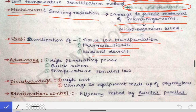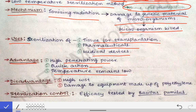The advantages of cold sterilization are: it has very high penetrating power because the ionizing rays can penetrate deeply. It has quick action because mutations can be produced very quickly and microbes can be killed rapidly. Also, the temperature remains low, so materials and substances that are very sensitive to high temperature can be easily sterilized with this technique.